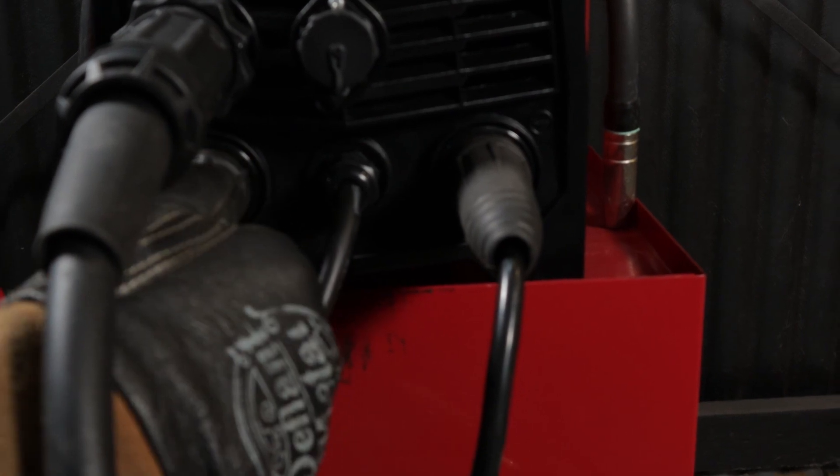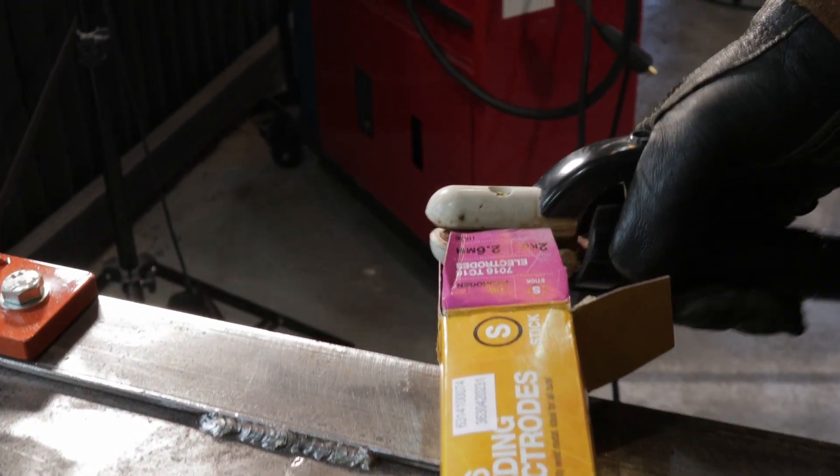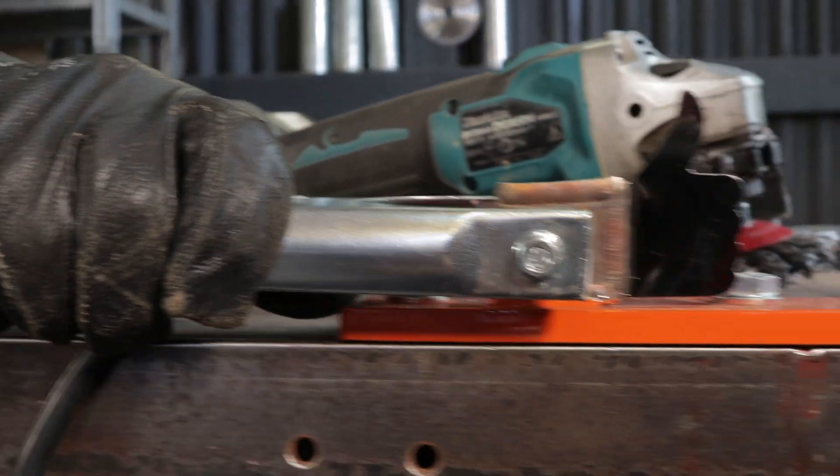I'm using 7016 3/32nd or 2.5 millimeter electrodes for the vertical up so I don't blow through the route run. I can increase the inductance to penetrate even more when I increase the arc length. The welder will burn away any undercut and track slag. A lot of people make train tracks with an angle grinder in between each vertical pass to remove any slag or undercut. The inductance will do this for you once you've had some practice.